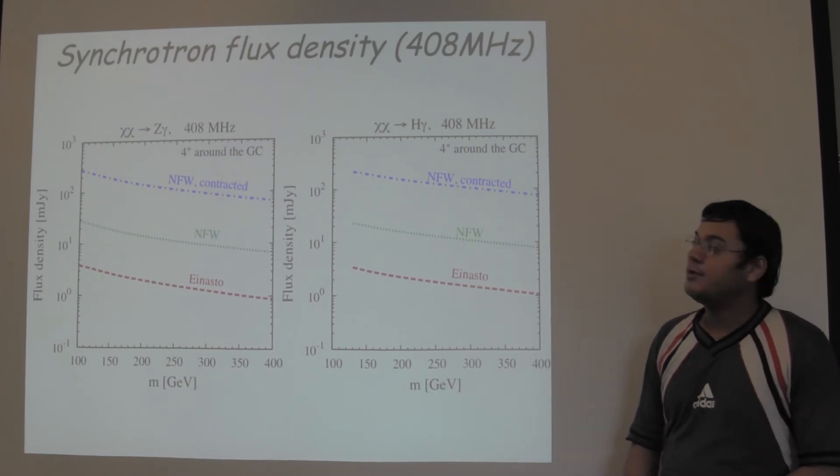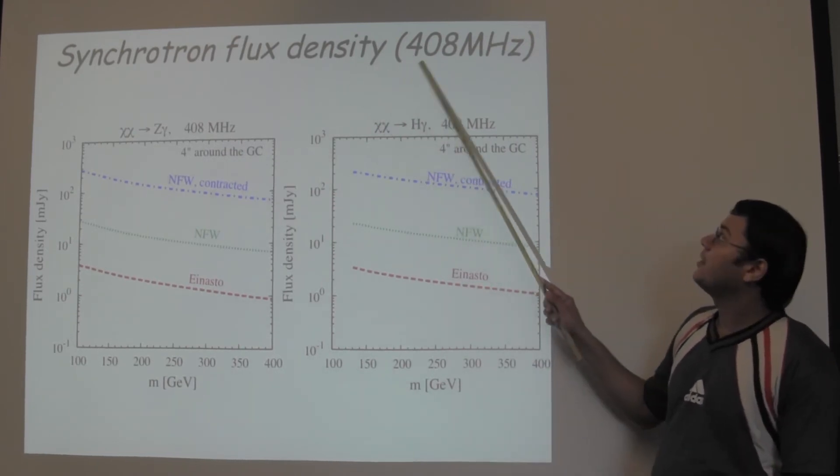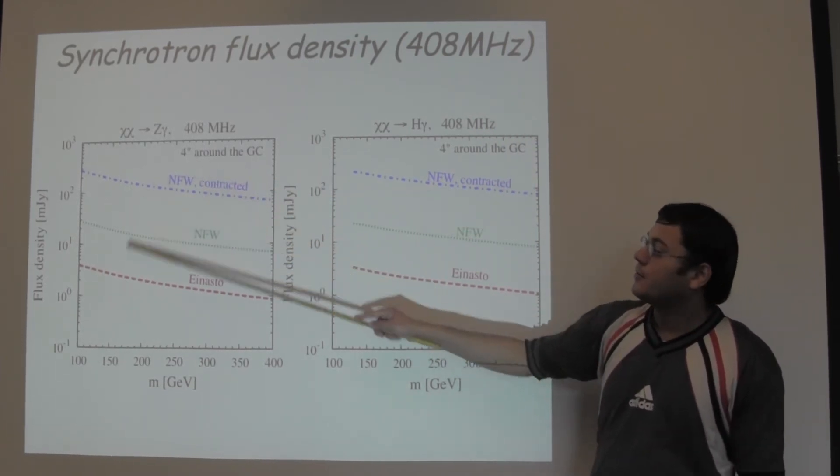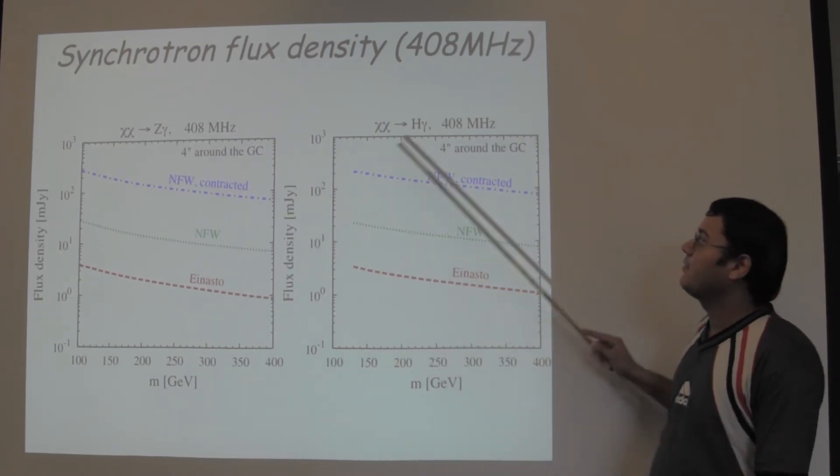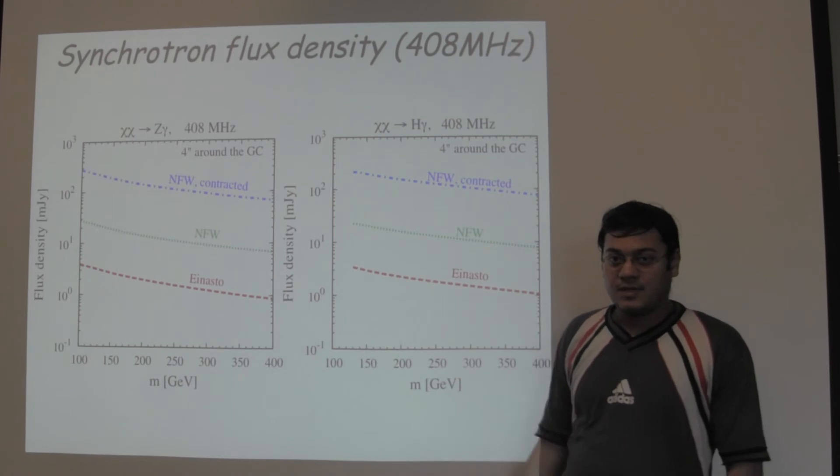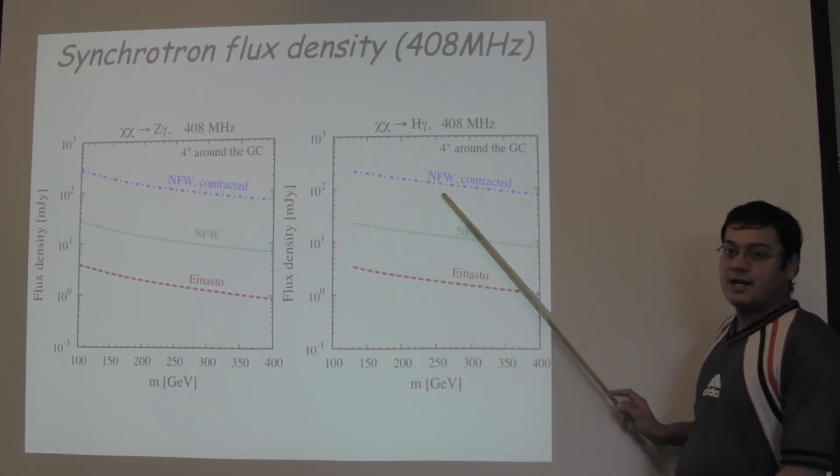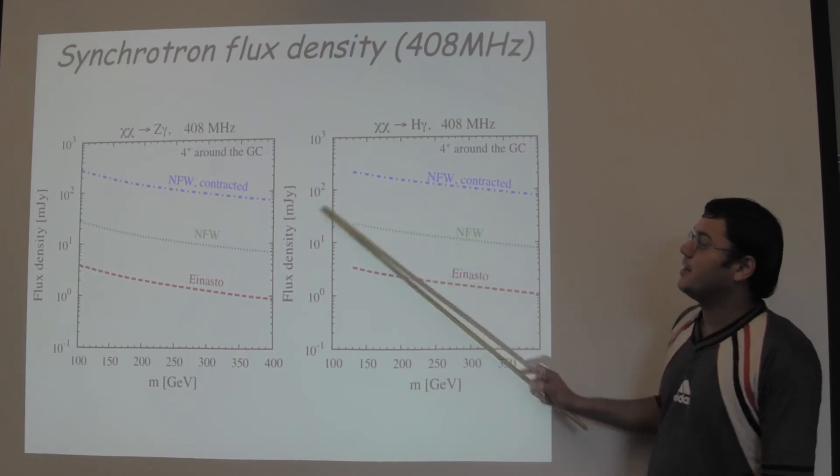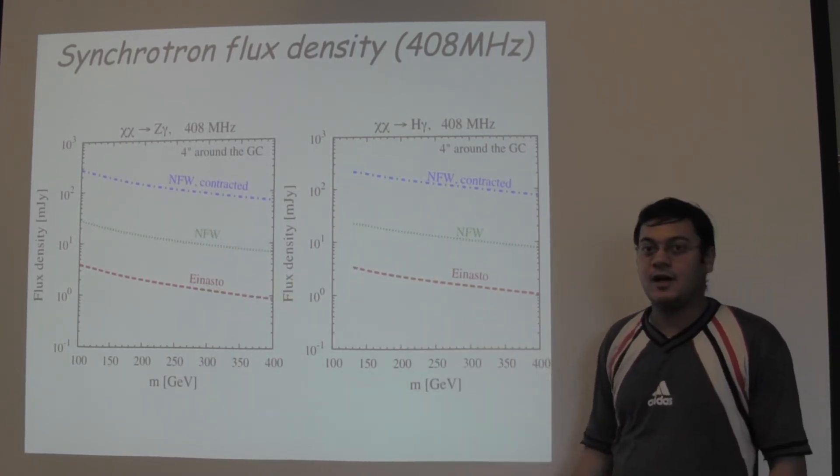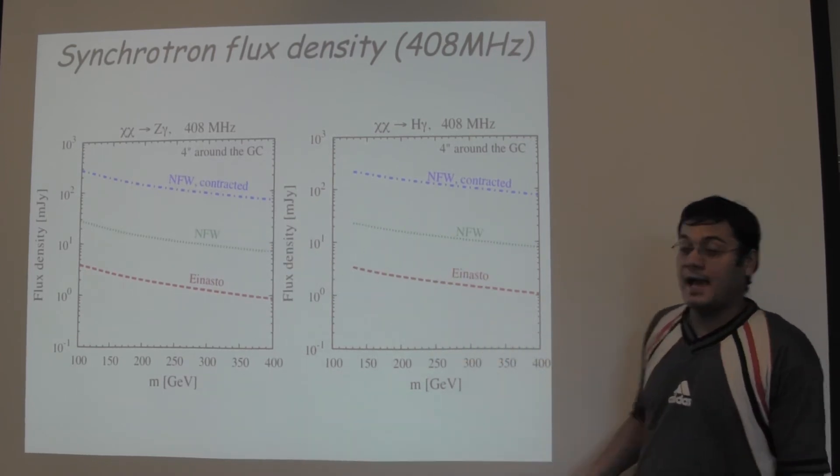In this slide, we show our calculated synchrotron flux densities for 408 MHz in a region 4 arc seconds around the galactic center. For the dark matter going to Z gamma channel and for the dark matter going to Higgs gamma channel. As one can see from this figure, the NFW contracted profile gives the largest synchrotron flux density in milliJansky and the synchrotron flux density for the other dark matter profiles varies by orders of magnitude in this region as is expected.